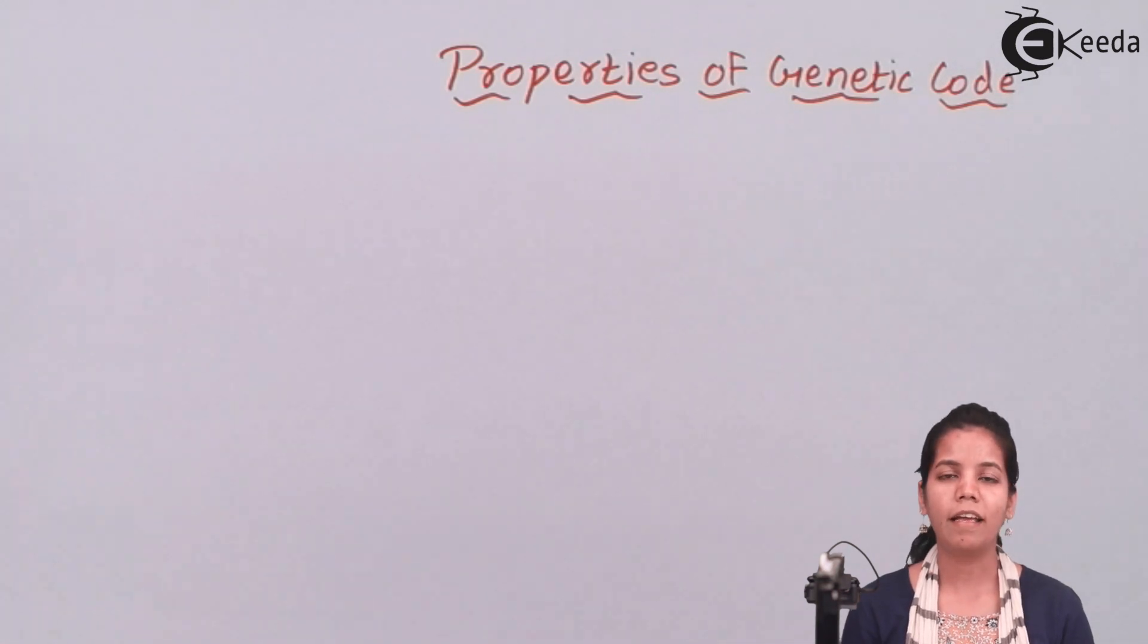So during protein synthesis, mRNA that is messenger RNA, transfer RNA, and ribosomes come together and form your protein or polypeptide. But there are certain genetic codes or codons present on mRNA and these codons on mRNA have certain properties.